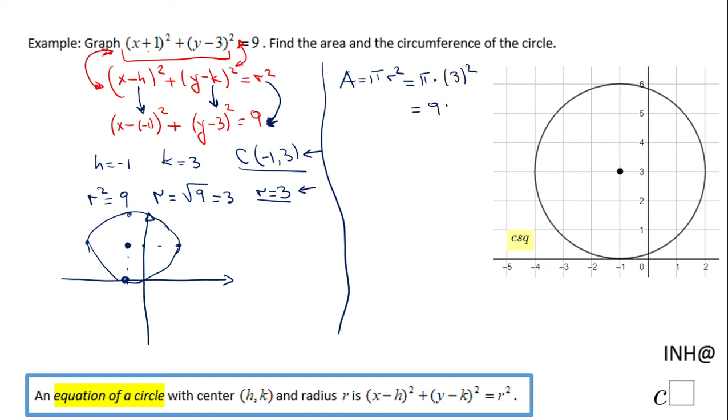And the circumference is 2πr, so in this case it's going to be 2π times 3, and that'll be 6π. That is the circumference of the circle.